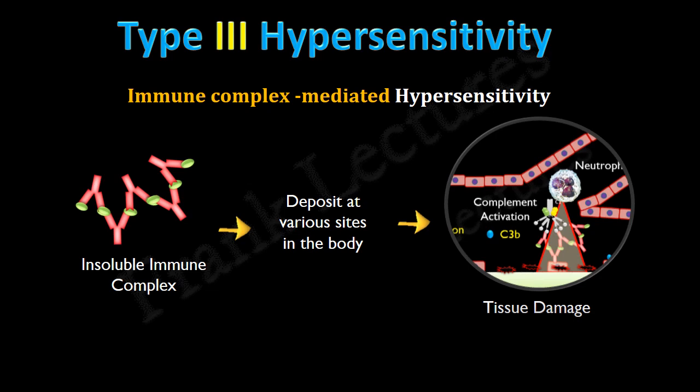So in this video lecture, we understood that type 3 hypersensitivity reactions are caused by soluble immune complexes of a certain size. They get deposited in walls of small blood vessels or other sites in the body. Once deposited, these immune complexes activate complement and inflammatory response that damages the tissue. That's all in today's video lecture. Please don't forget to like, share, and comment. Thank you for watching.